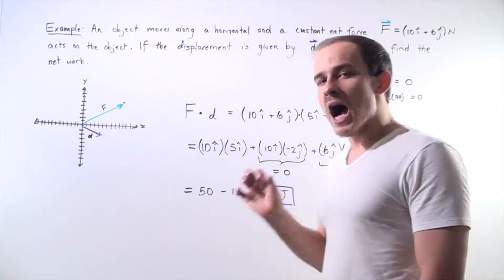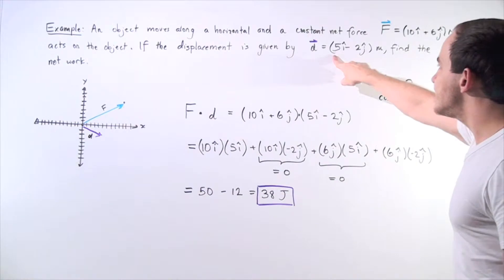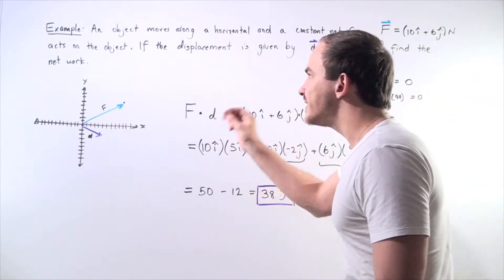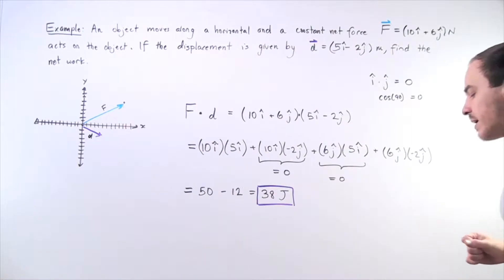Now displacement of my object is given by this vector where we have the x component and the y component of my displacement vector. And we want to find the net work done on my object when this constant net force acts on my object.